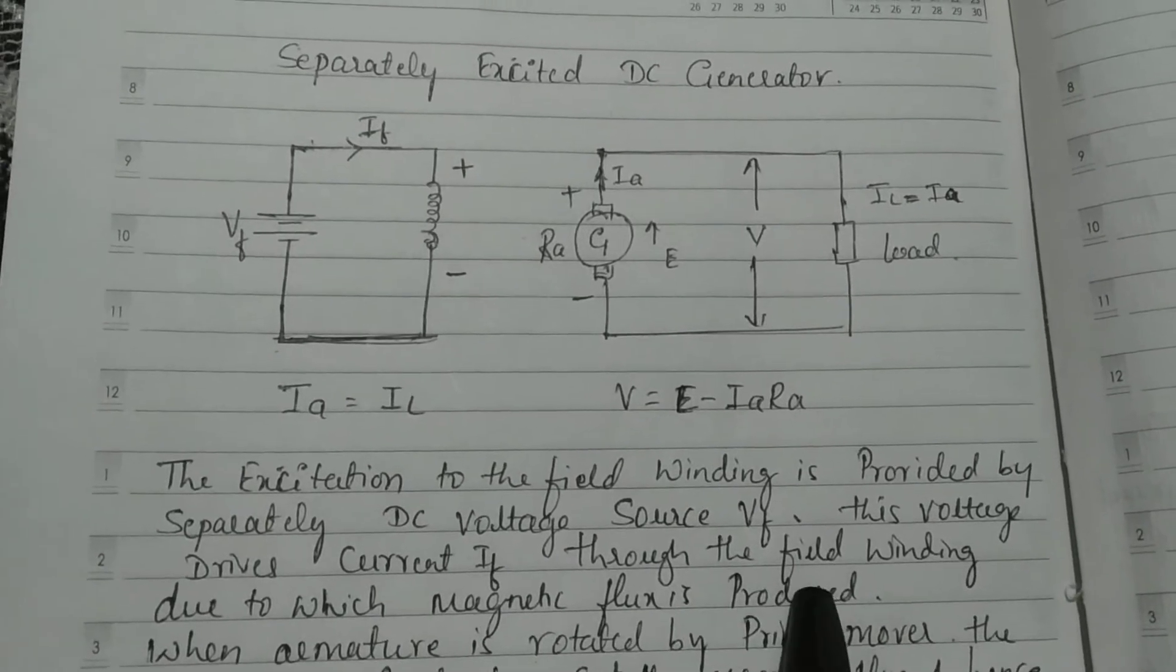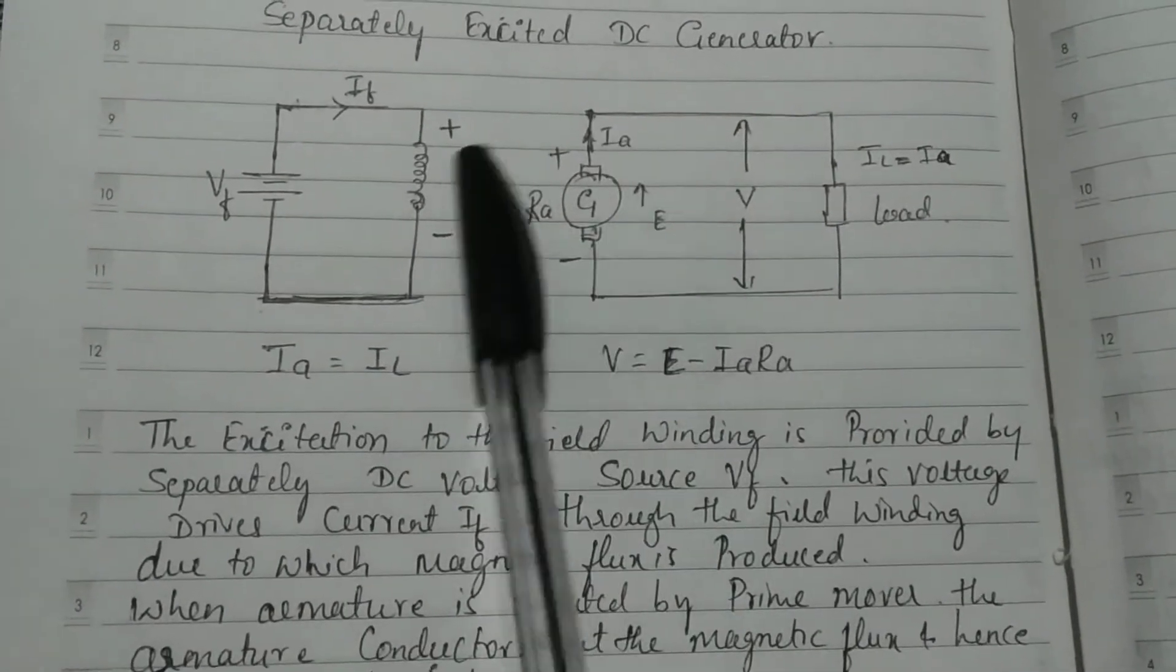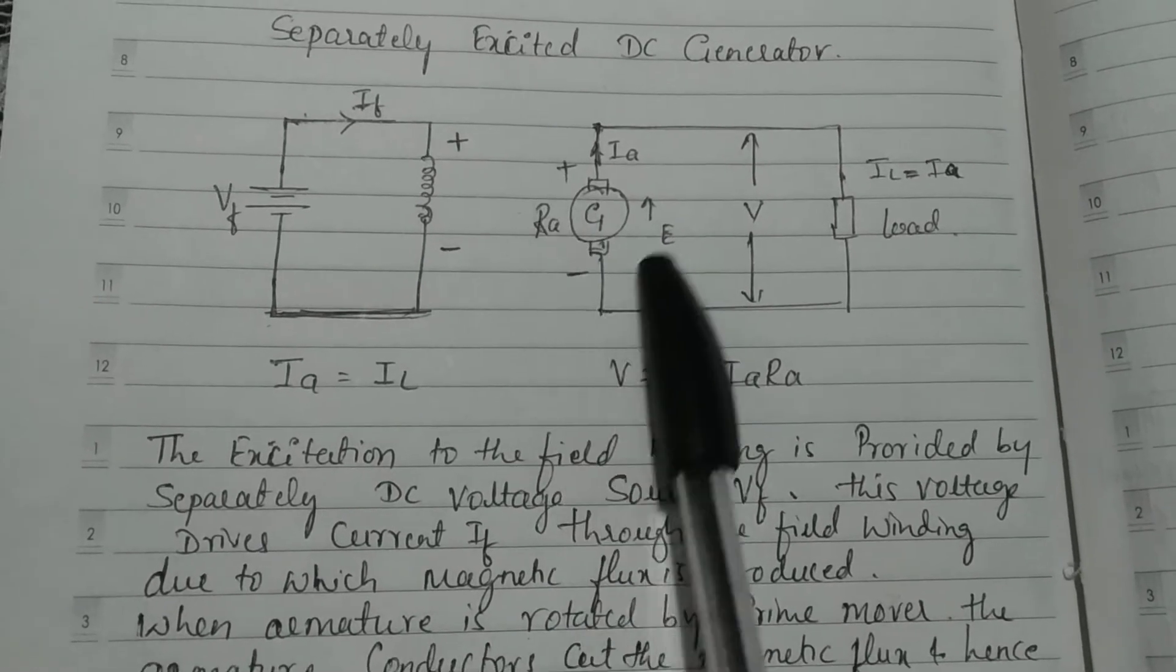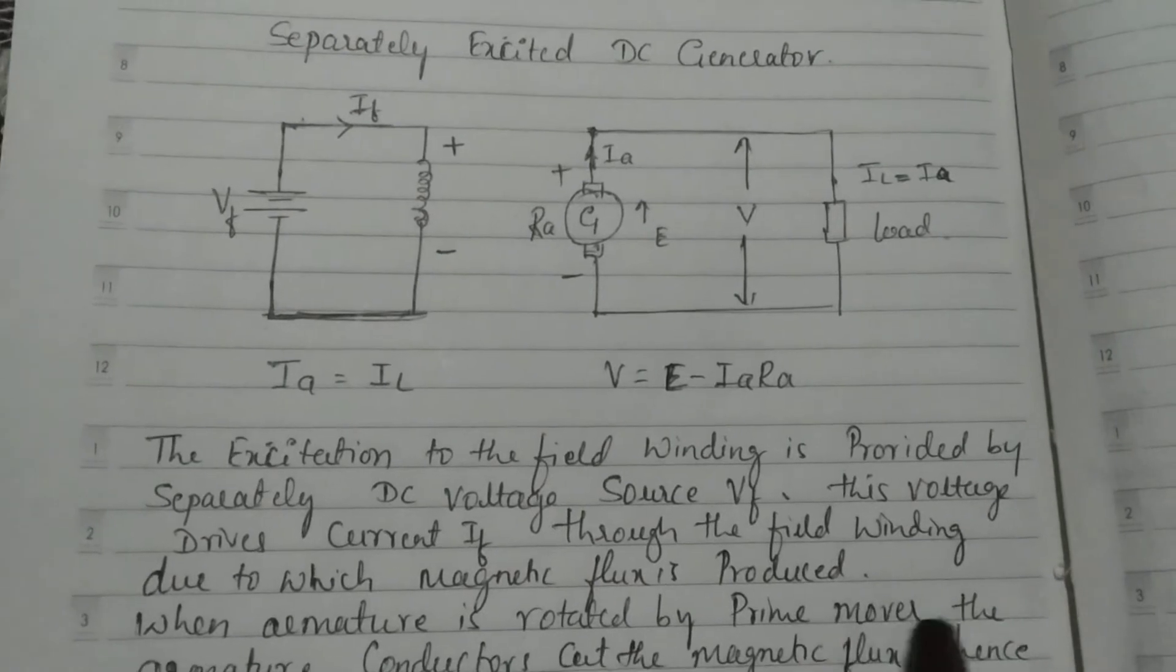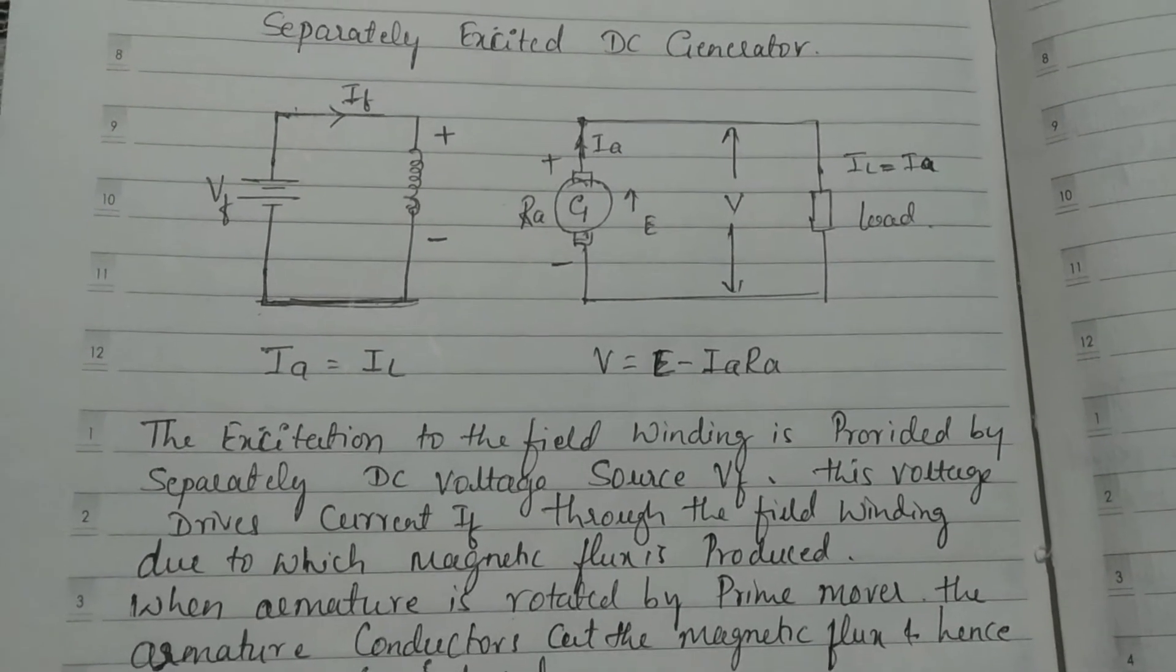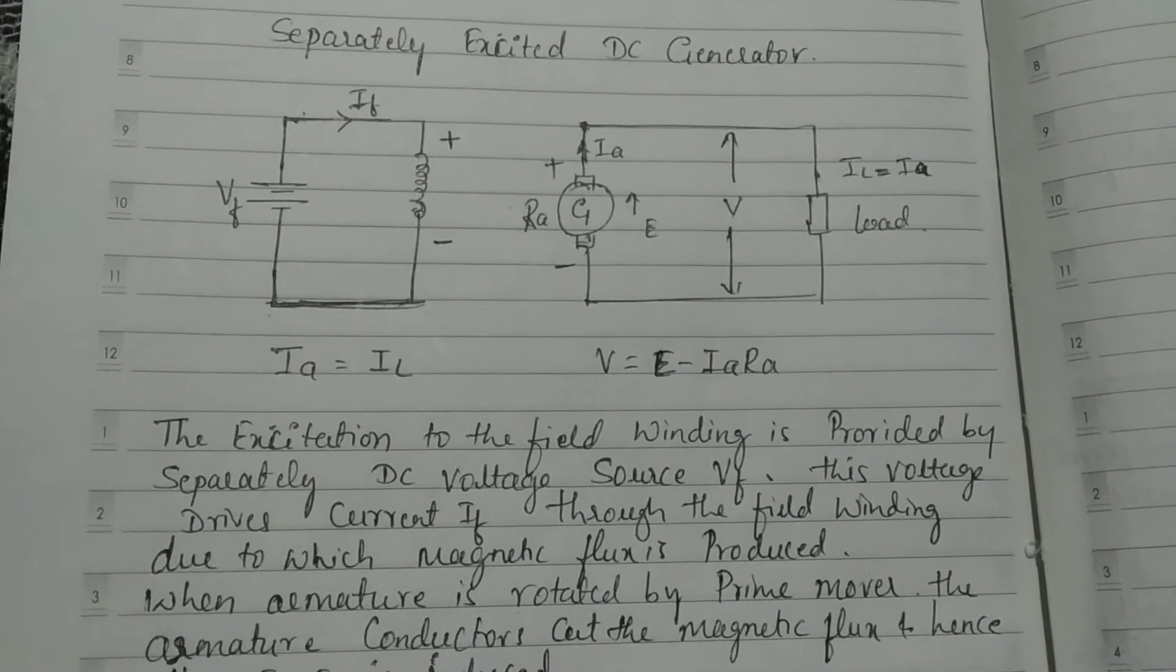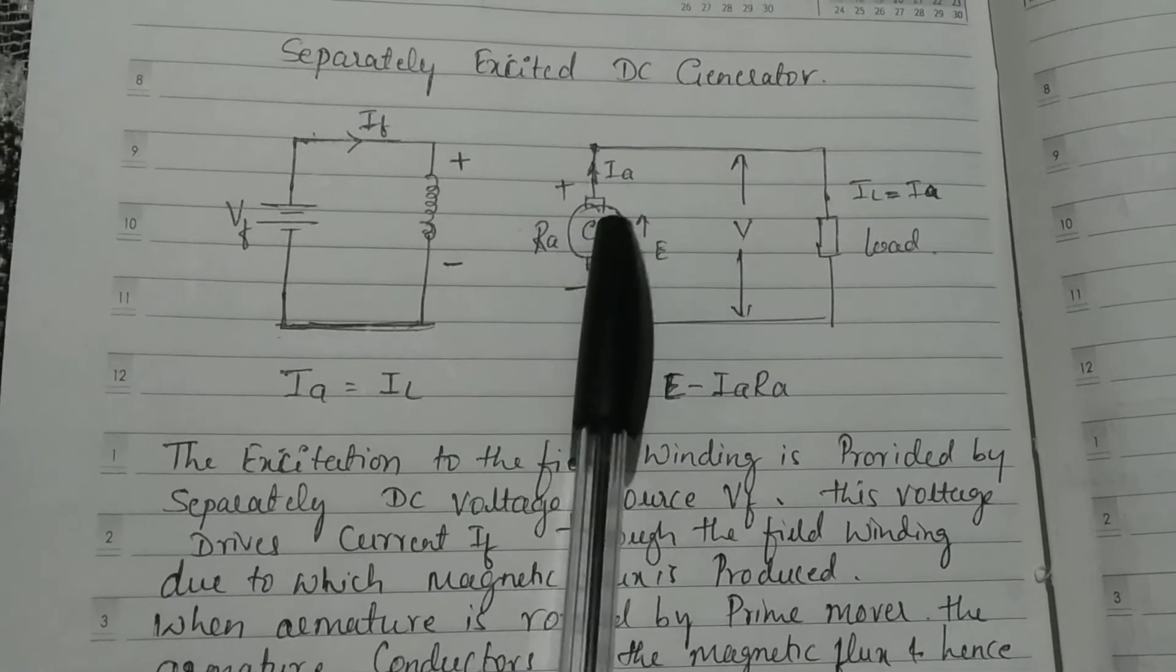When the armature rotates by the prime mover, the armature conductors cut the magnetic flux, and hence EMF is induced.